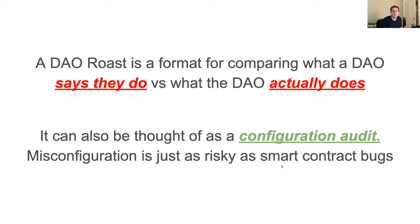At its core, roasting a DAO is comparing what the DAO says they do publicly — on Twitter, on forums, wherever — versus what they actually do. What they actually do means looking at the smart contracts and seeing how votes are taking place, how governance is distributed, how proposals are executed once ratified. Is it a trustless process? Is there a single person who is still an admin? Are there random people who can veto things? They say they're decentralized and run by their community, but what's actually going on under the hood?